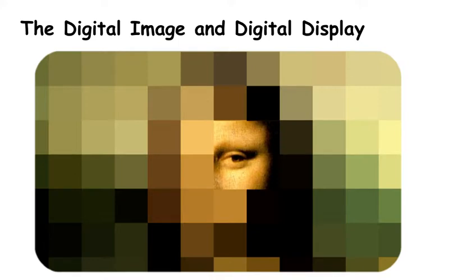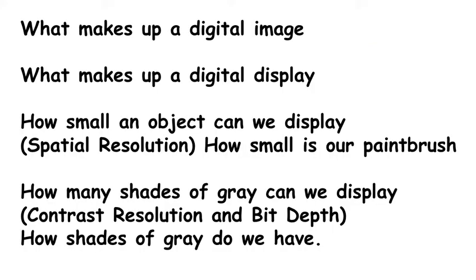This video presents characteristics of the digital image, the digital display, defining a matrix, pixel, spatial resolution, contrast resolution, and bit depth. We'll talk about what makes up a digital image and digital display, how small an object we can display — called spatial resolution — in terms of how small the tip of our paintbrush is, and how many shades of gray we can store and display, which we'll call contrast resolution and bit depth — the amount of shades of gray in our crayon box, which is all gray crayons.